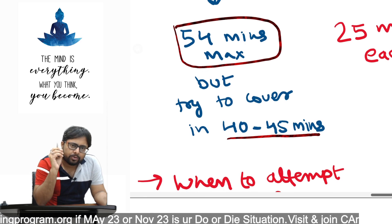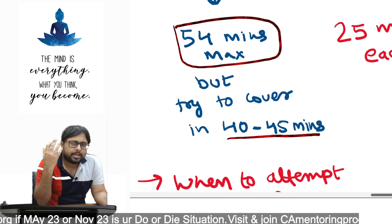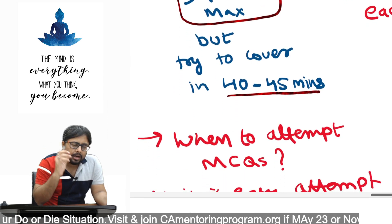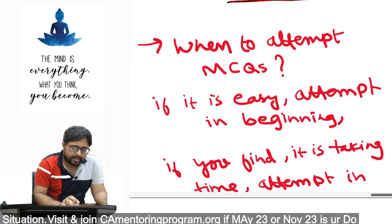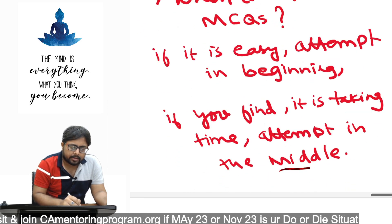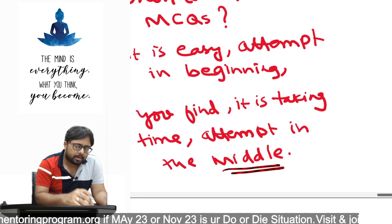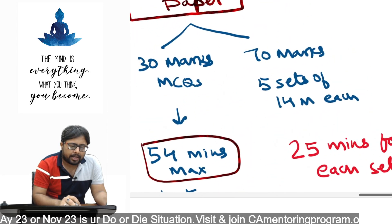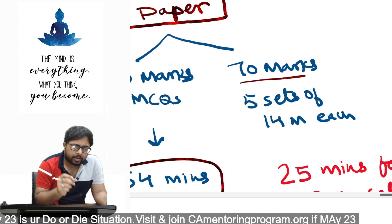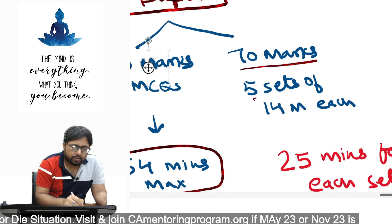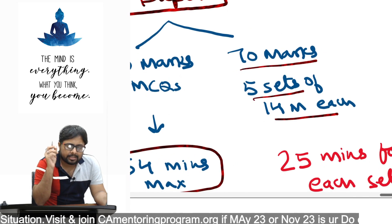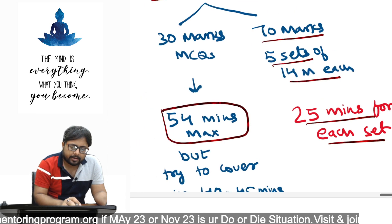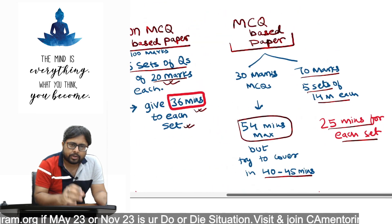If the MCQs are easy, attempt them at the beginning. But if they are taking time or are a little difficult, the best time to attempt them is in the middle of the paper. The other 70 marks remain — there are five sets of 14-mark questions, and you should give 25 minutes to each set. This is how you should allocate your time.